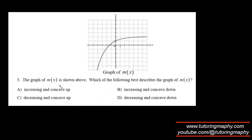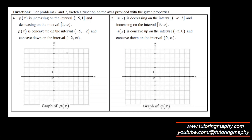Multiple choice question: a graph of m(x) is shown — which best describes m(x)? It is clearly increasing since it's climbing, so we eliminate decreasing options. However, it is a frowning face — a downward curve — so it must be concave down. The answer is option B: increasing and concave down.